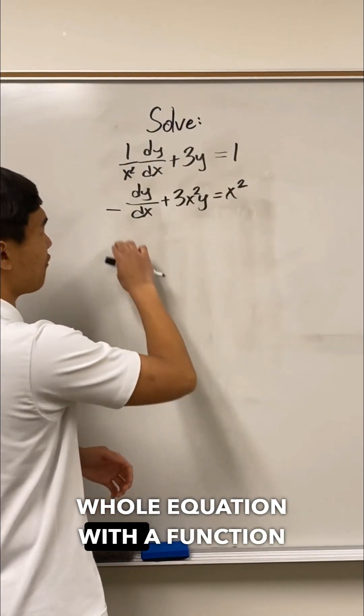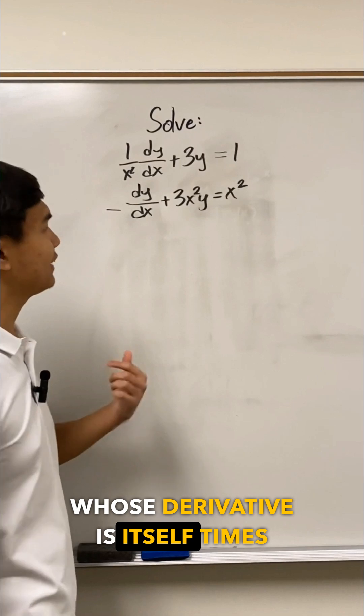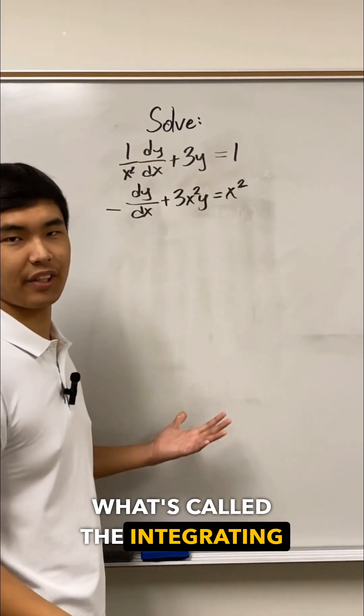Now we want to multiply this whole equation with a function whose derivative is itself times 3x squared. We find that using what's called the integrating factor.